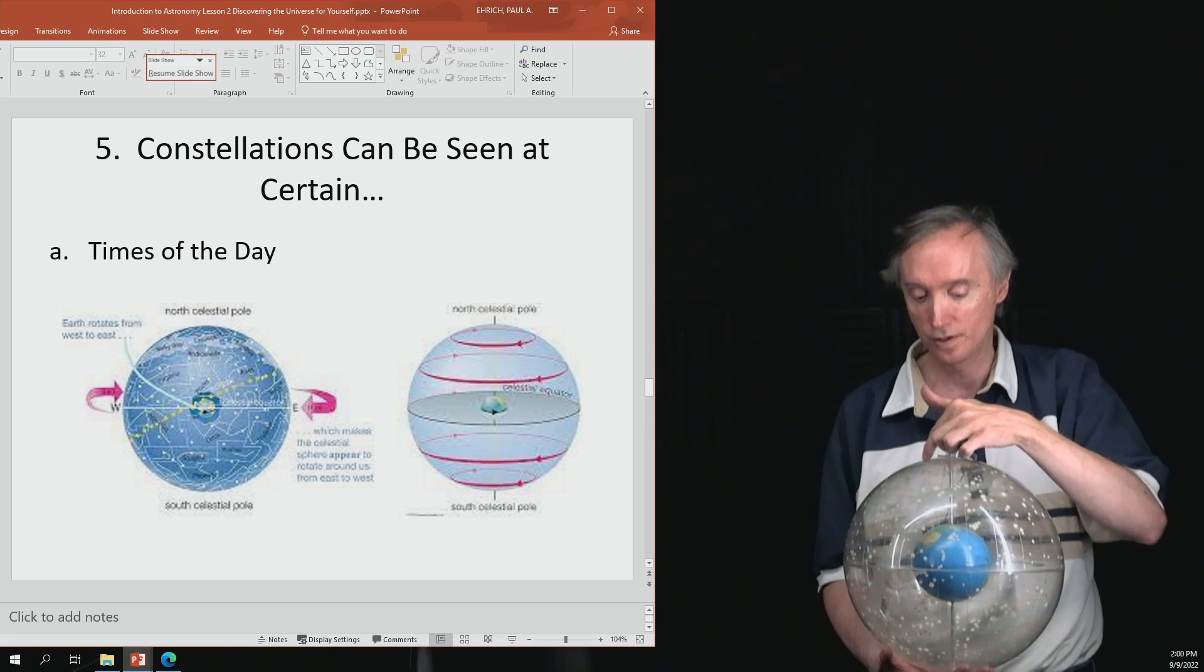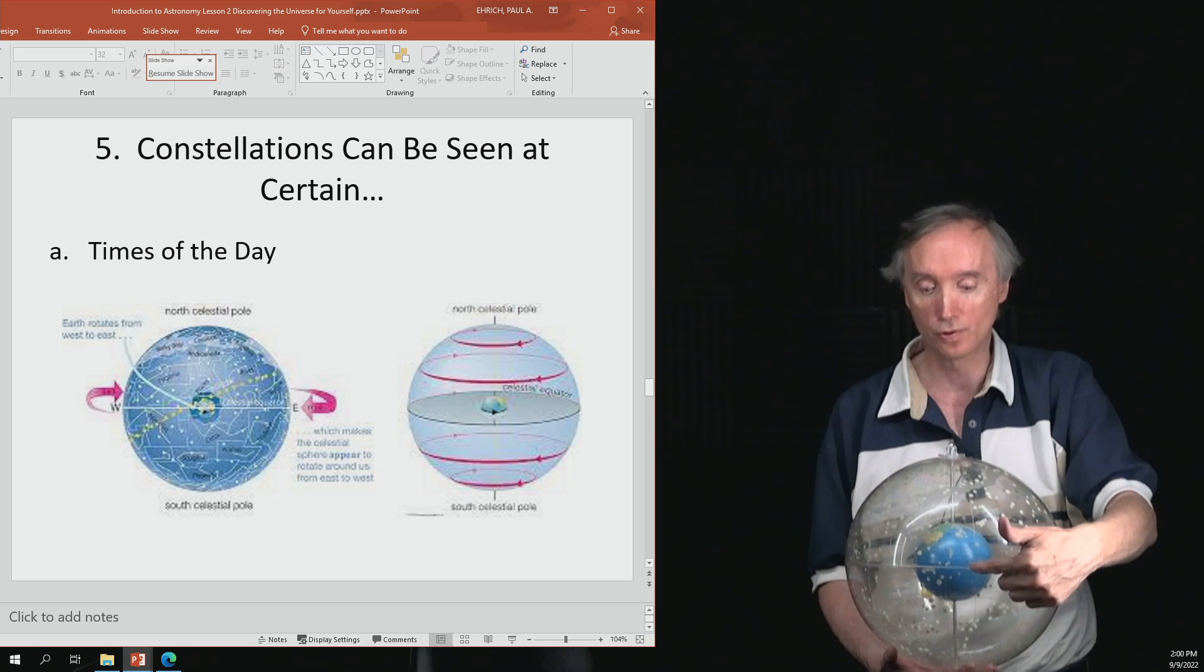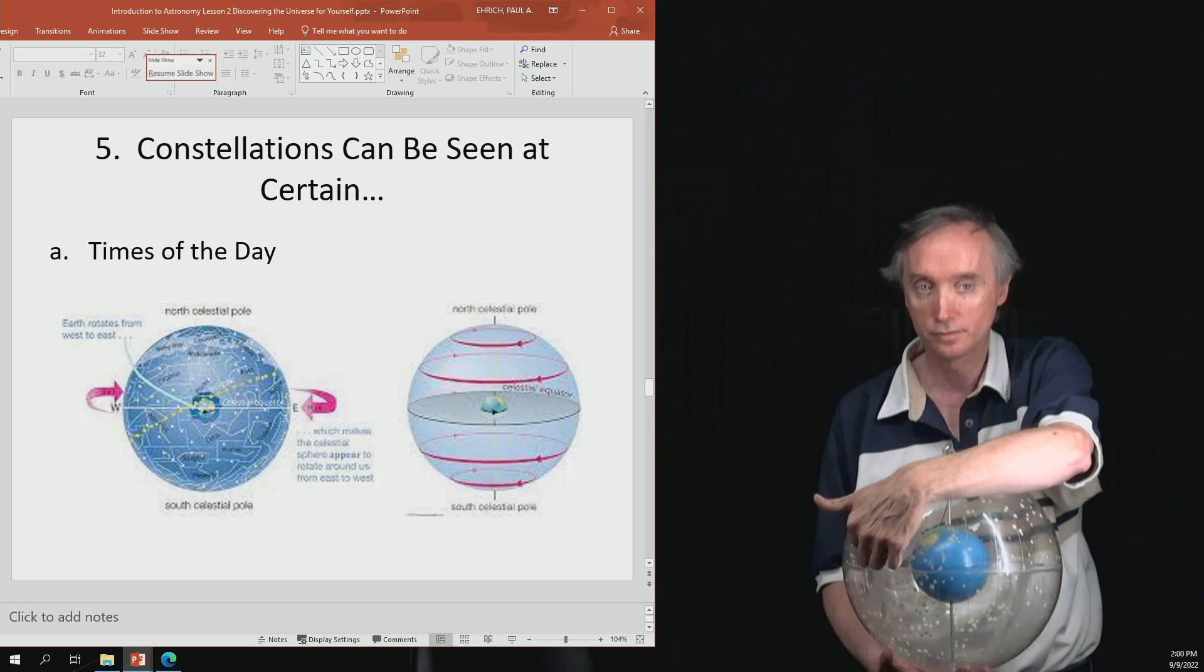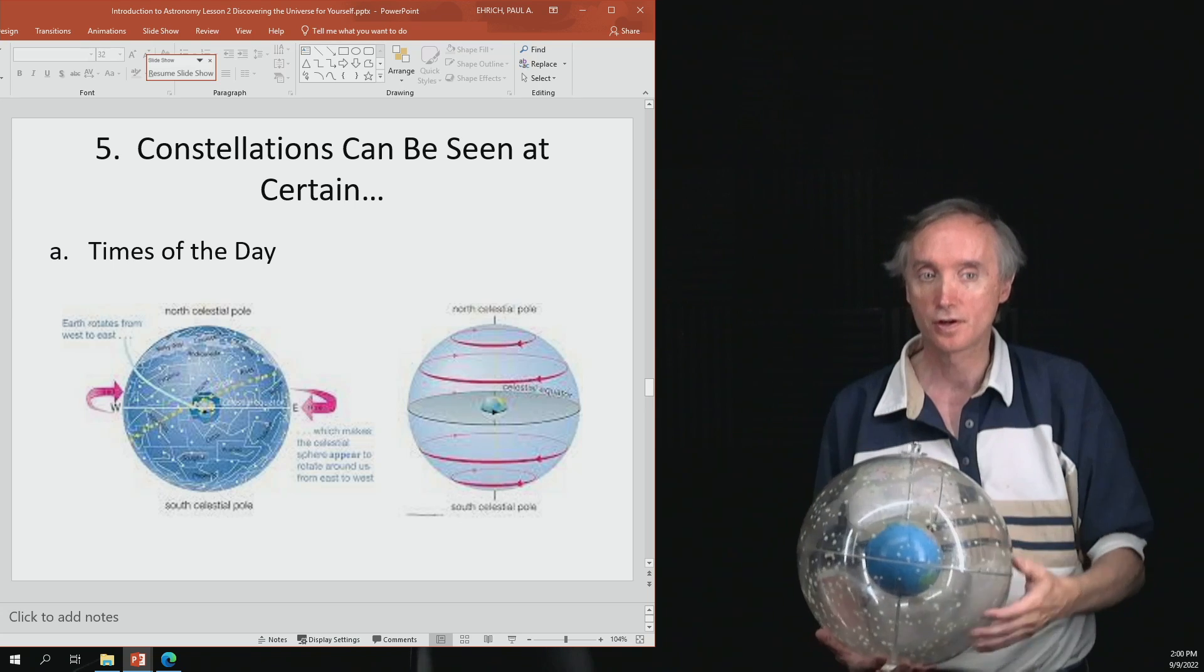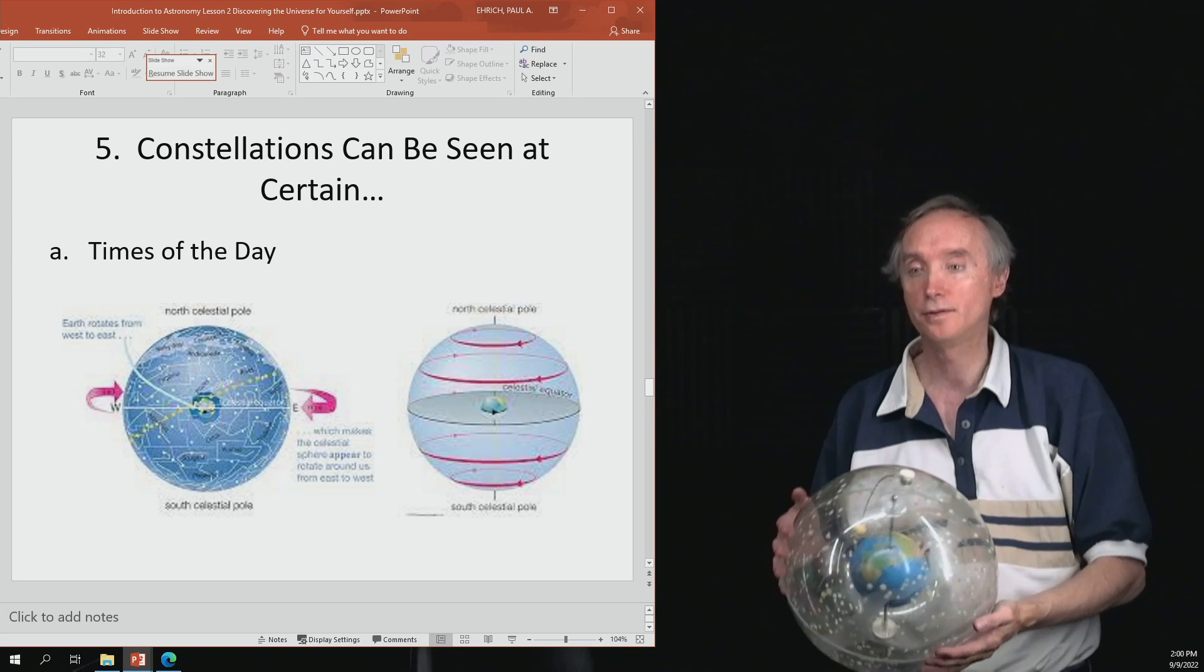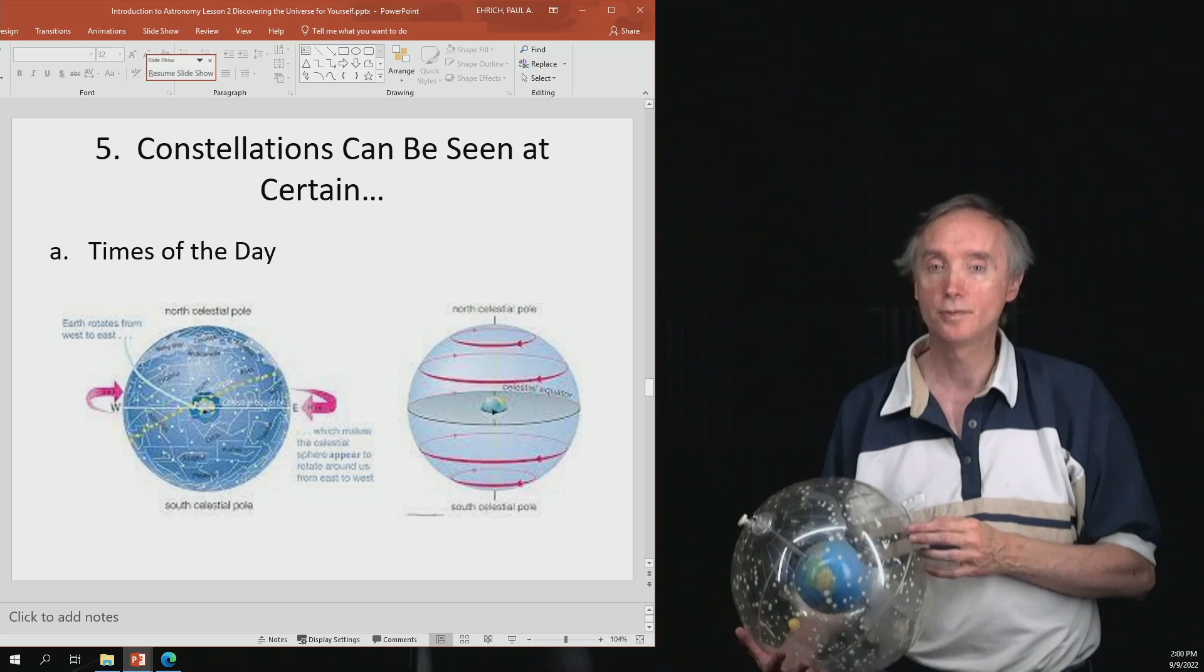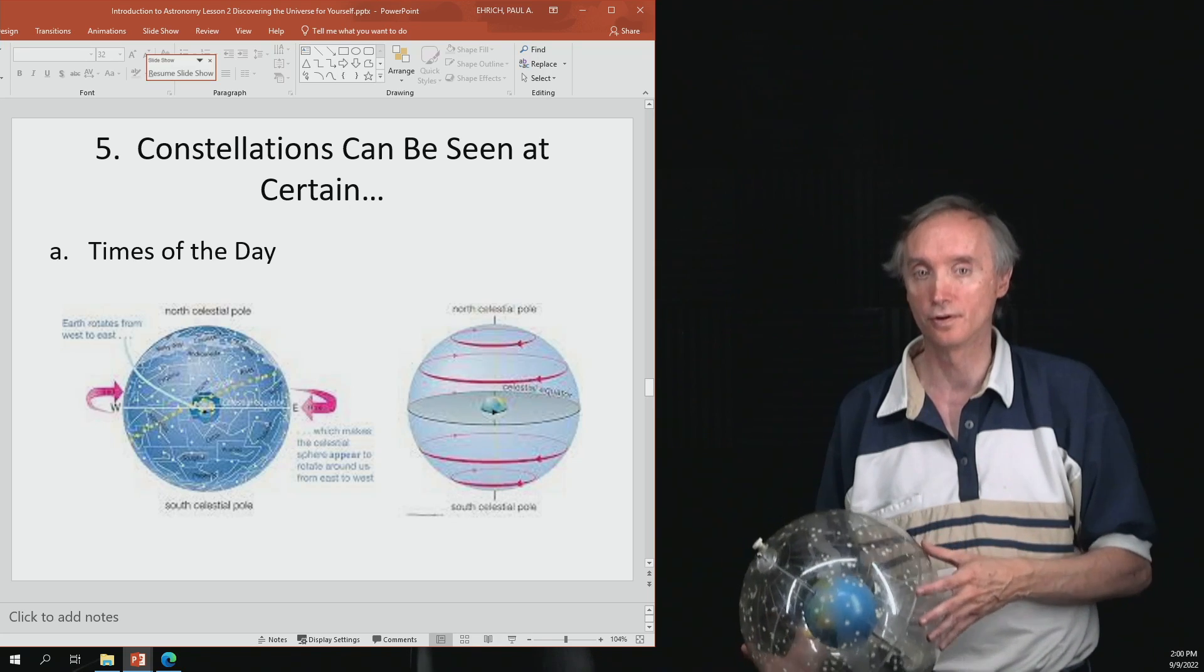Well, we're not going to be seeing that same star or constellation anymore. You're going to be over here somewhere looking at this one because the Earth has rotated. So the stars and planets and sun and moon, they all come up in the east and they set in the west because of the rotation of the Earth itself.